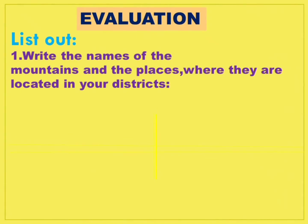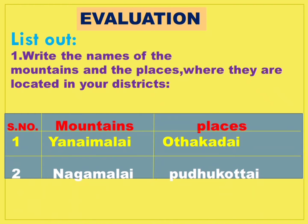List out and write the names of the mountains and the places where they are located in your districts. Our district is Madurai, so Yanai Malai — it is in Uttakadai. Nagamalai — it is in Pudukotai. Others, write your area mountains and their places.